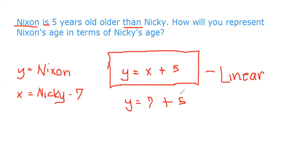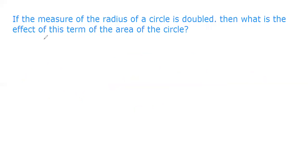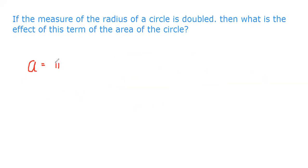Another example: if the measure of the radius of a circle is doubled, what is the effect on the area of the circle? To answer this, we need the formula for the area of a circle. The area of a circle is A = πR².